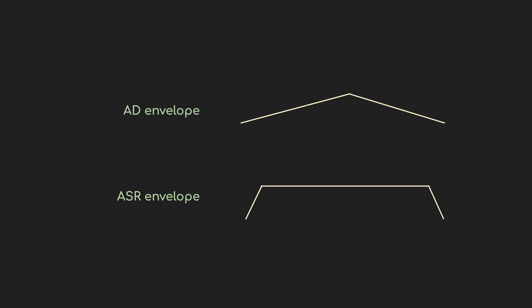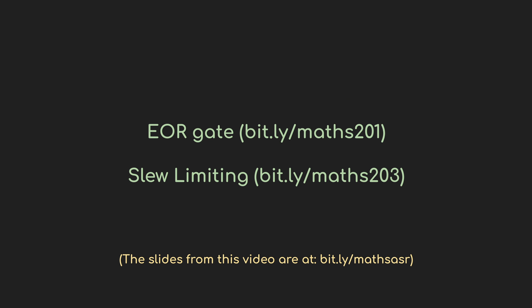To accomplish this, I'm going to use two techniques I've talked about before. I'm going to use the end of rise or end of cycle outputs, which I covered in the original Maths 201 video. And I'm going to take that output and run it through a slew limiter, like I covered in Maths 203. There'll be links to each of those in the description and at the end of the video.